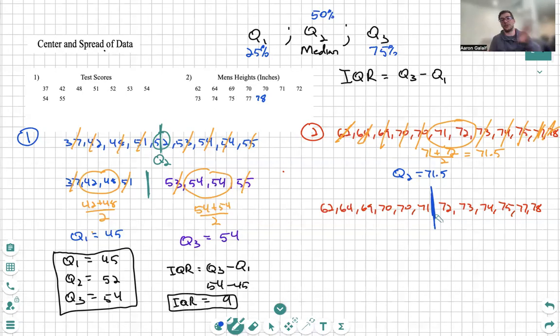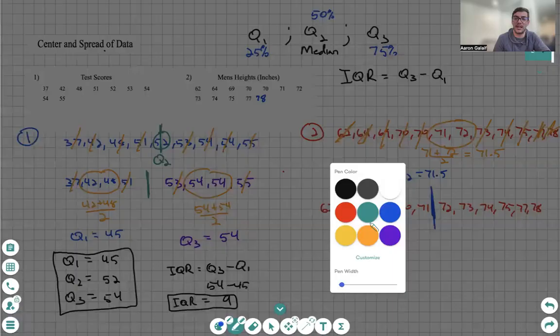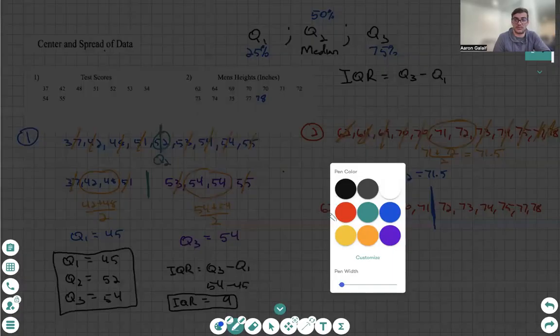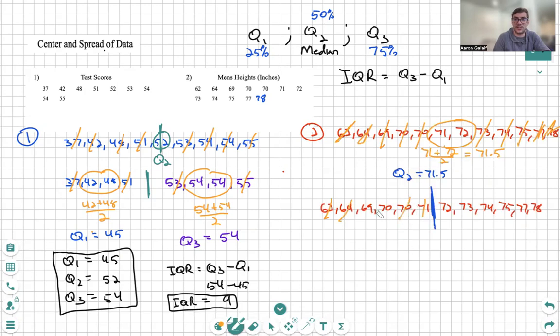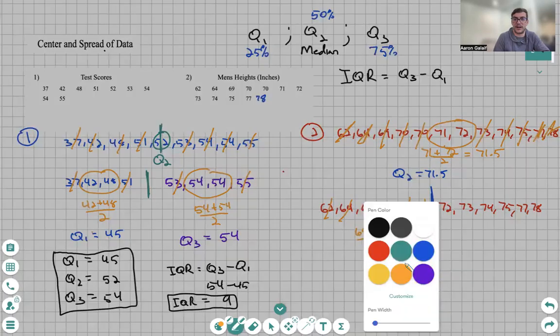So now between 71 and 72 we're going to put our line. Now we need to find the median of both those sections, and that's Q1 and Q3 respectively. Let's cancel, cancel, cancel, cancel. We see we have both them here, we have to add them and divide by two. We have 69.5, and then we do it again over here. 74 plus 75 over two, we get 74.5.